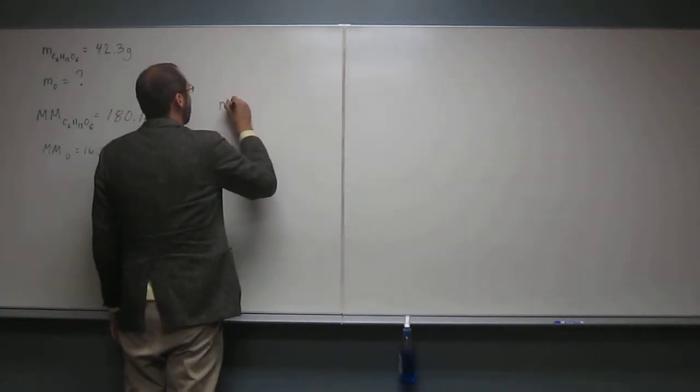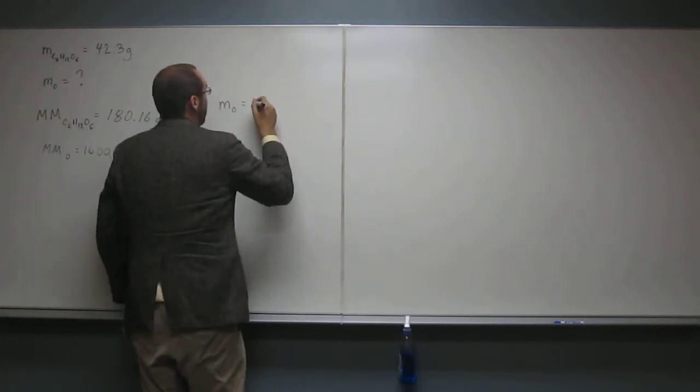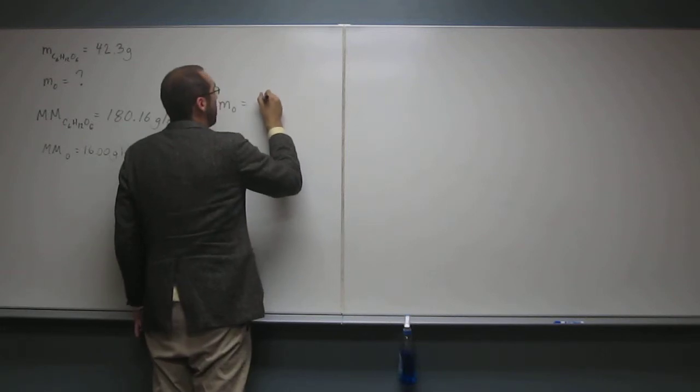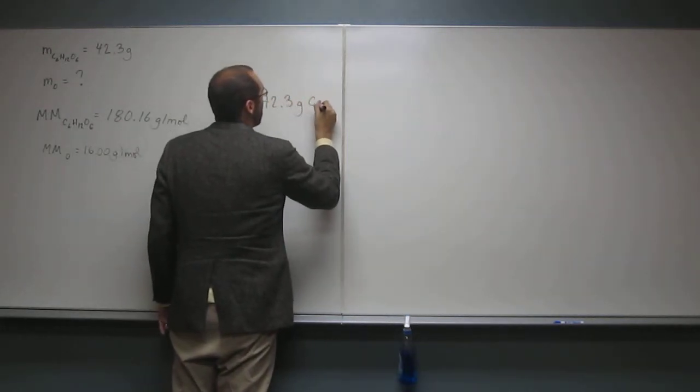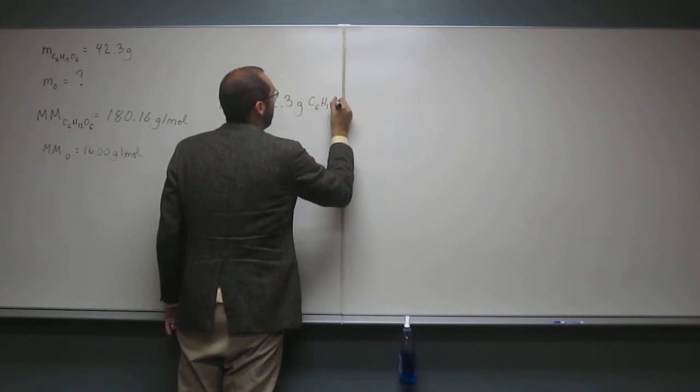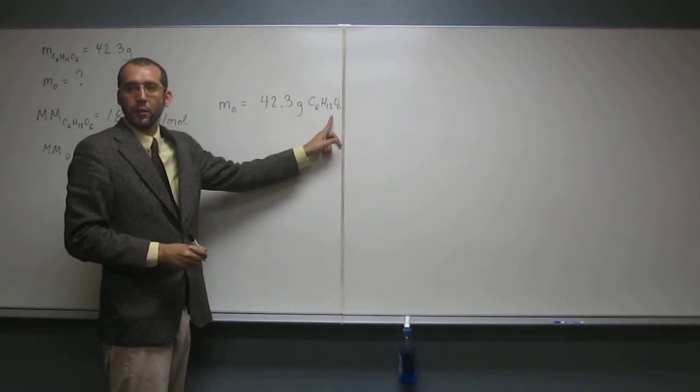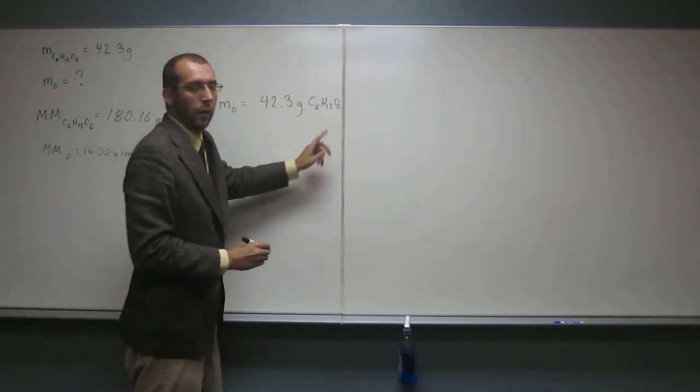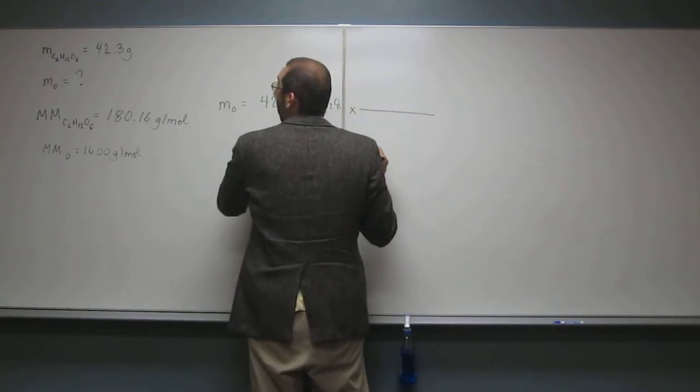So, the mass of oxygen, that's going to equal the mass of the C6H12O6, so 42.3 grams of C6H12O6. And it's good to kind of keep your space with writing those molecular formulas.